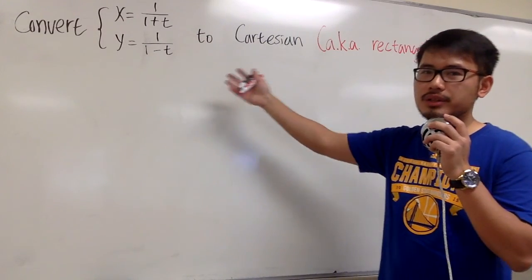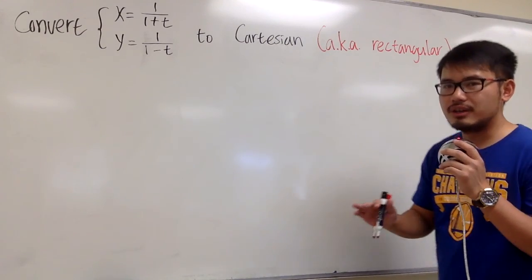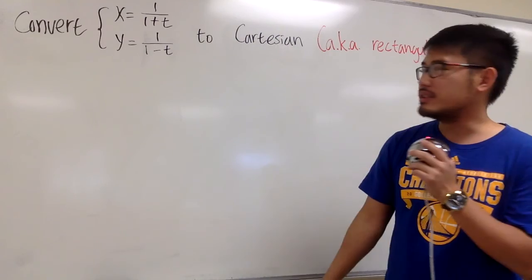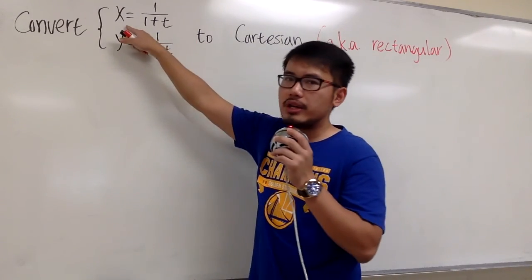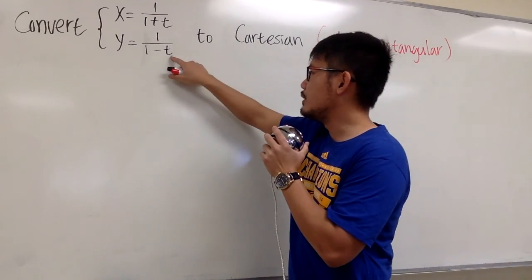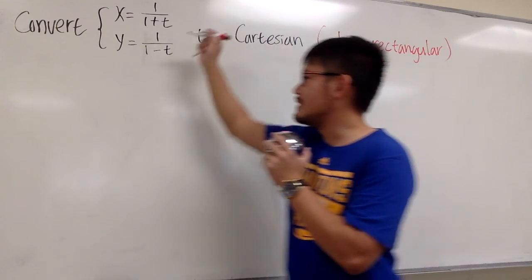We are going to convert this parametric equation to Cartesian, aka rectangular. For our answer, we should just have an equation which are only x and y. The strategy is, let's take a look at the x equation and isolate the t. Once we have the expression of t, we're plugging that into this t right here of the y equation. Let me put it down.